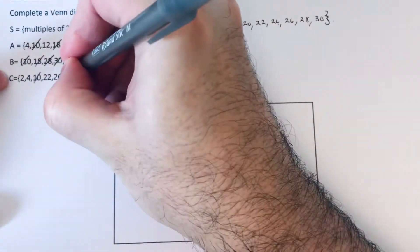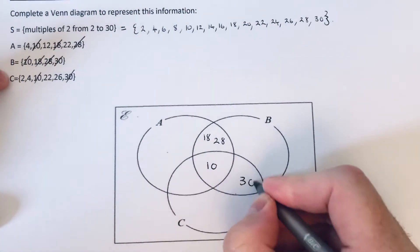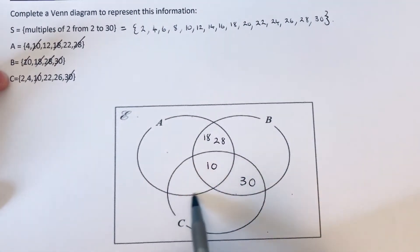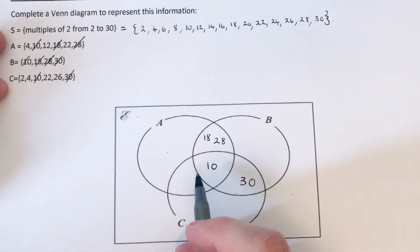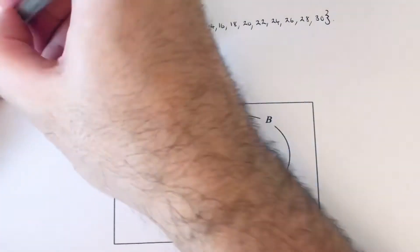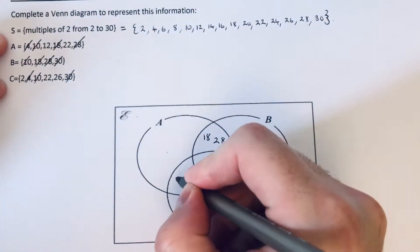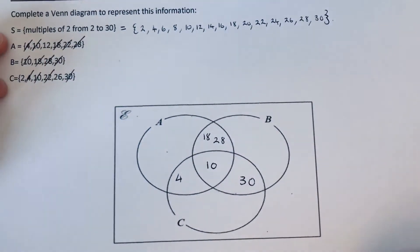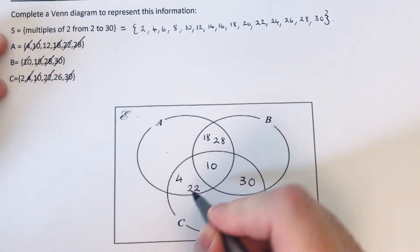And the final bit here is A and C but not B. So we're looking at set A and C. We've definitely got a 4 in A and C, and we've got a 22 in A and C.